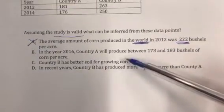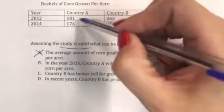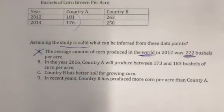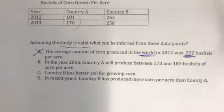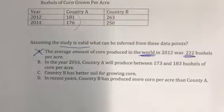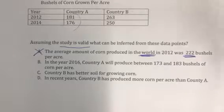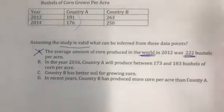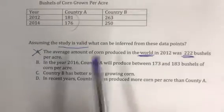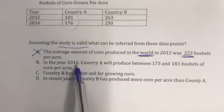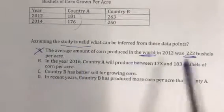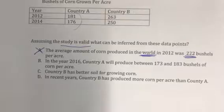Option B says in the year 2016, Country A will produce between 173 and 183 bushels of corn per acre. That's looking at this information and predicting what's going to happen in future years. When we looked at data points, we were given more information and a longer data table. We don't have enough data here to make predictions about 2016, much less what those specific numbers will be.